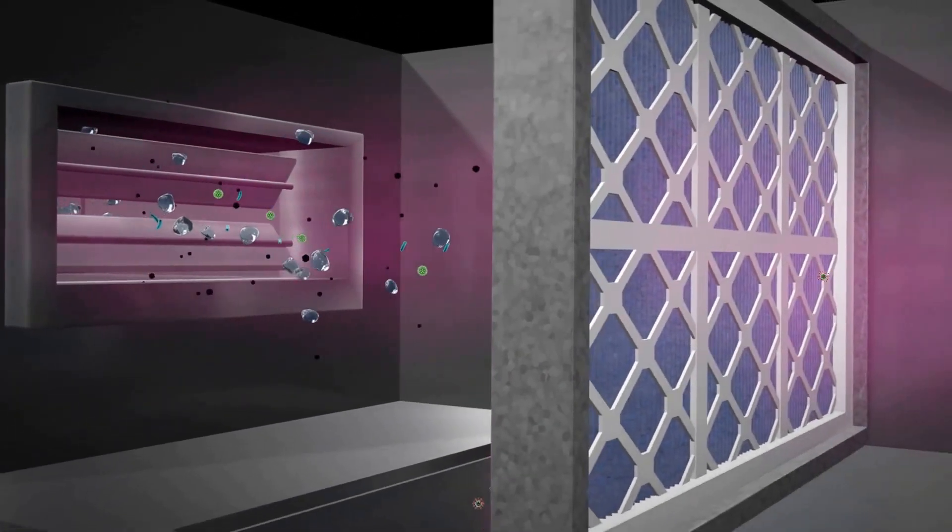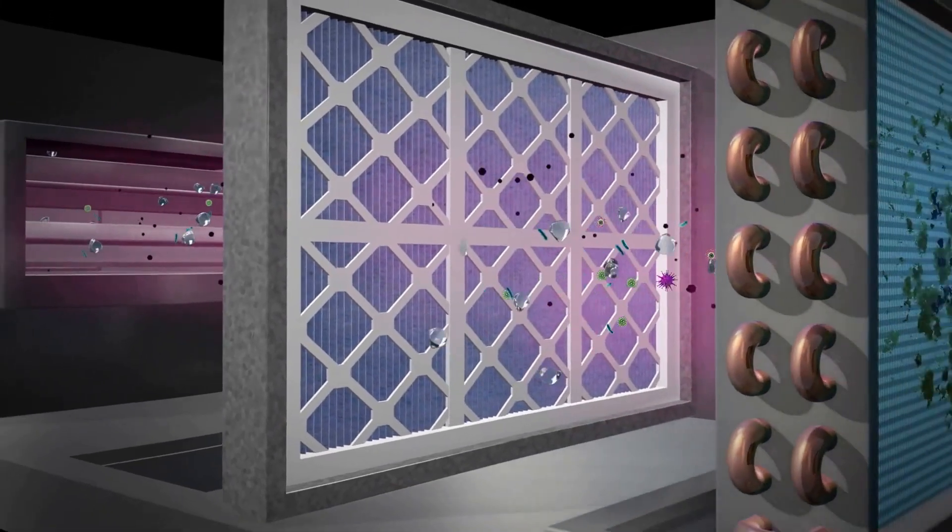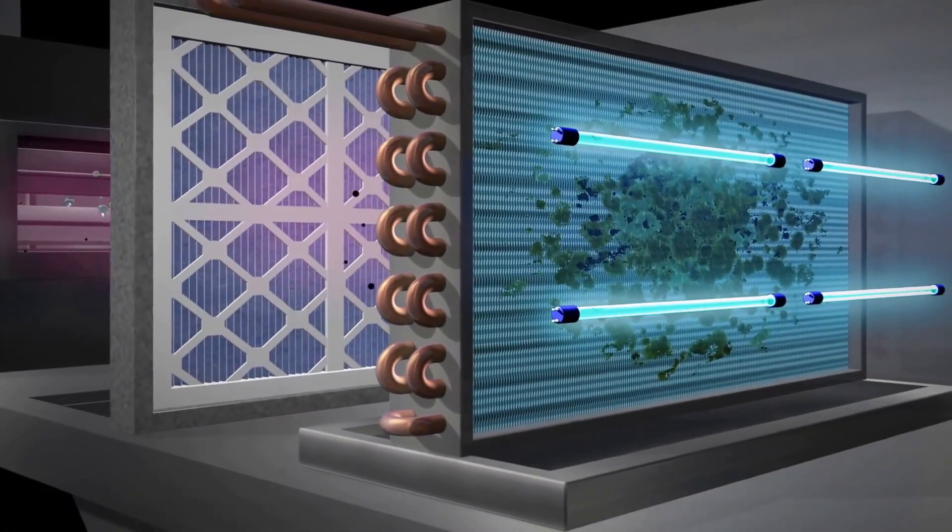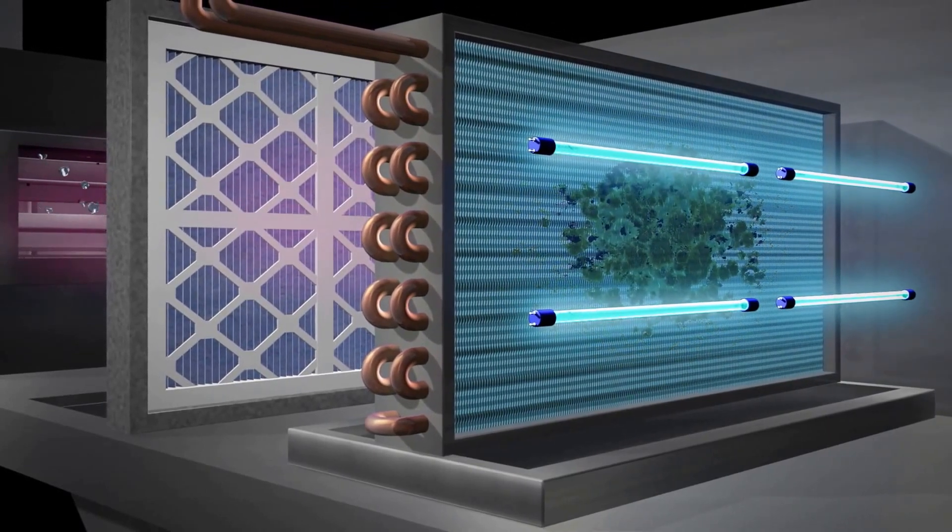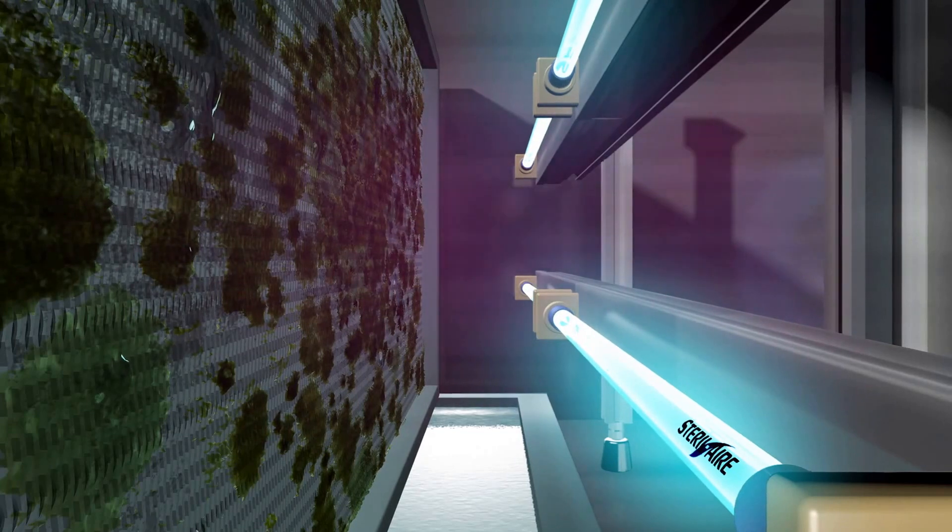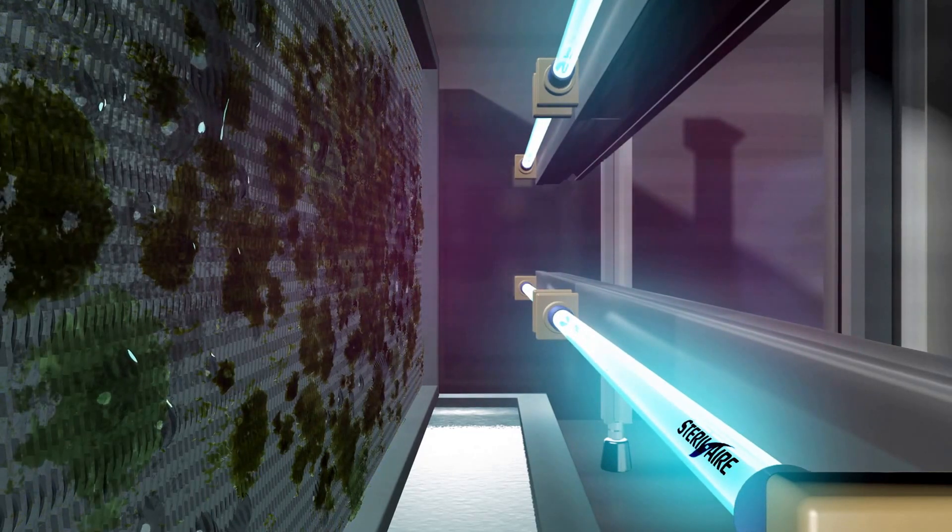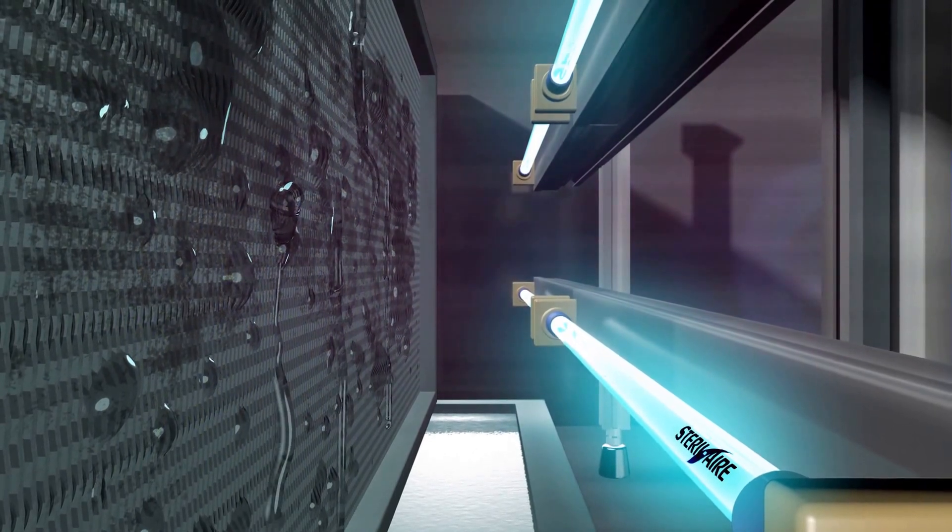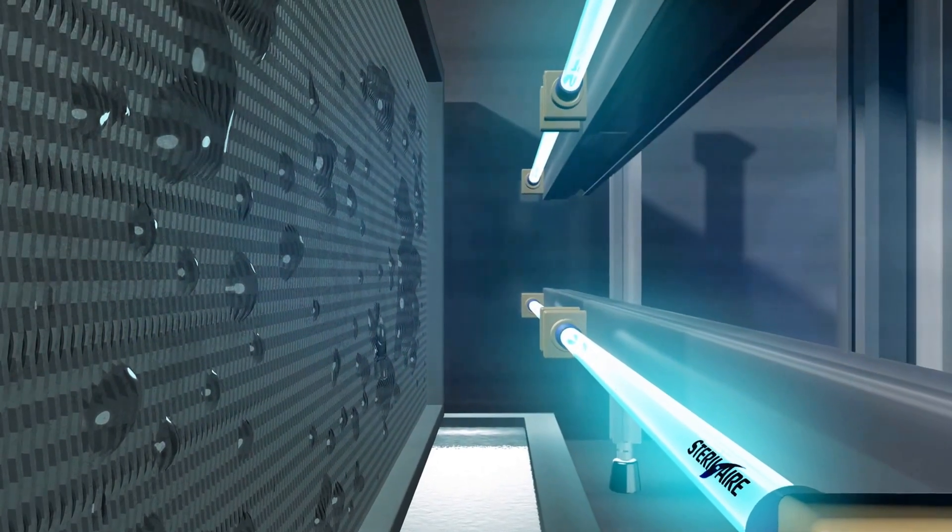By positioning sterile air's high-output UVC emitters at the coil, one can eliminate more than 99% of all virus, bacteria, and mold traveling in the air. Sterile air also eliminates the mold and biofilm growing on the coil, and therefore prevents micelle toxins and spores from reproducing and spreading sickness and headaches.